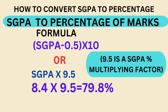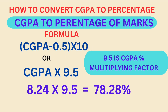I hope all of you understand how to convert SGPA to percentage of marks. Simple formula: SGPA into 9.5, where 9.5 is the multiplying factor.